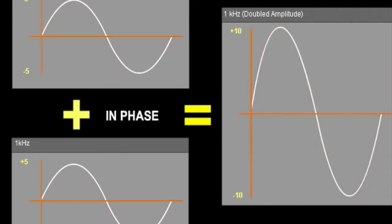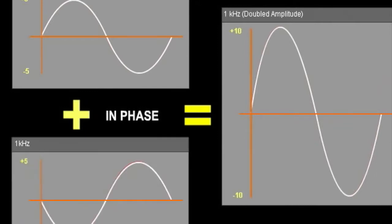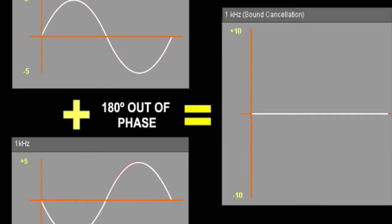Phase describes the time relationship between multiple signals and how they affect one another. When waves are in phase, their amplitudes are combined, creating a greater amplitude. If waves are out of phase, they will have a cancelling effect.